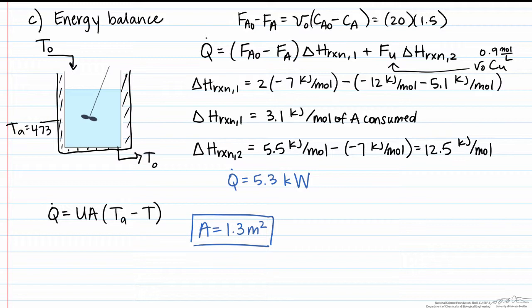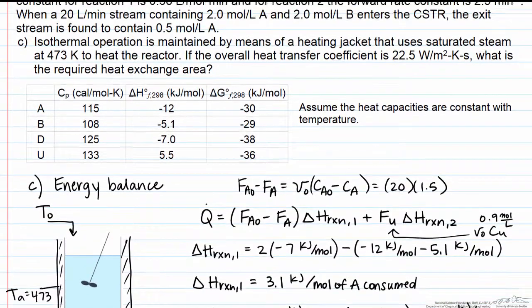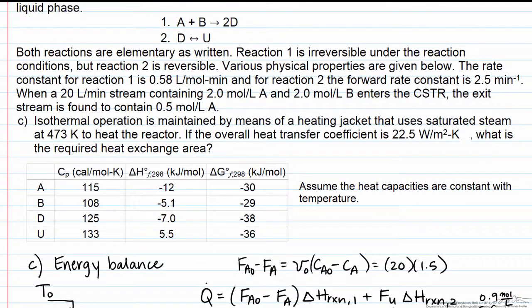This would be a more complicated calculation if instead of keeping track of these components that are only involved in a single reaction, if we kept track of components that are only involved in a single reaction, components A and component U, that lets us just focus on each reaction in the series and the heat that's required for each of those reactions. It would be a more complicated process if we were trying to use the moles formed of D in this process, since it's involved in multiple reactions.